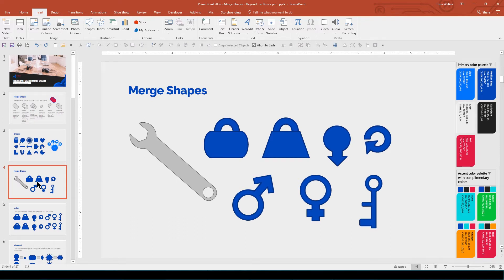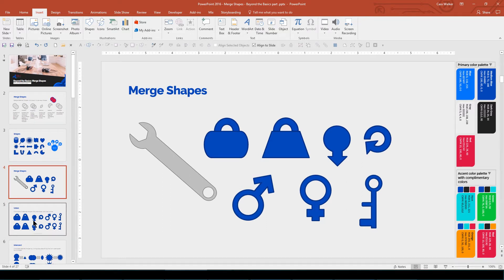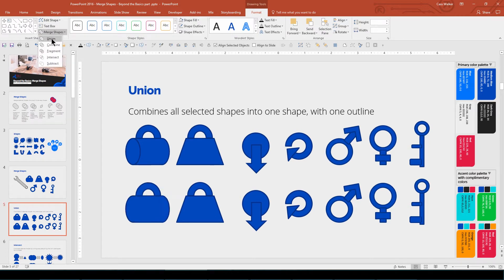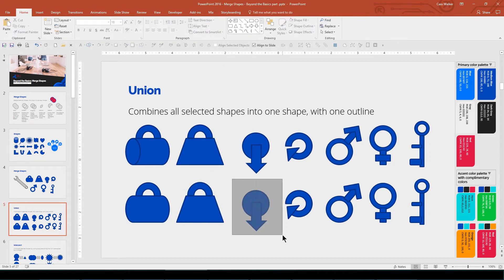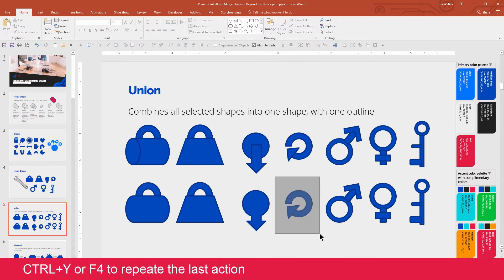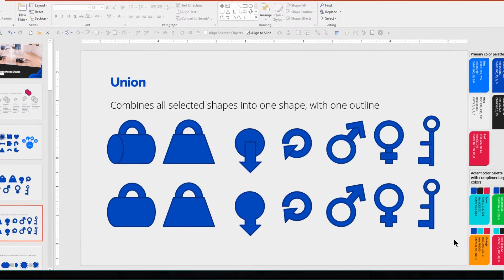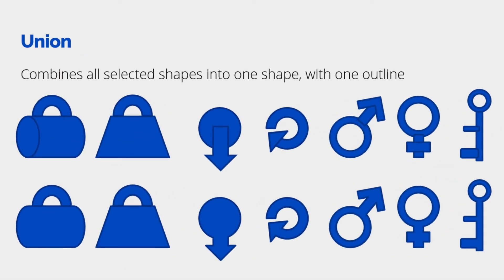The wrench is a bit complicated, so we'll look at it later. But let's see how easy it is to make these shapes into more unified versions using the Union Merge. I made a copy so you can see the before and after. Just select the two shapes — I used a half circle and cylinder here — then apply the Union Merge. We can select them and repeat the merge using Ctrl-Y or F4. And here they are: the Union Merged shapes.